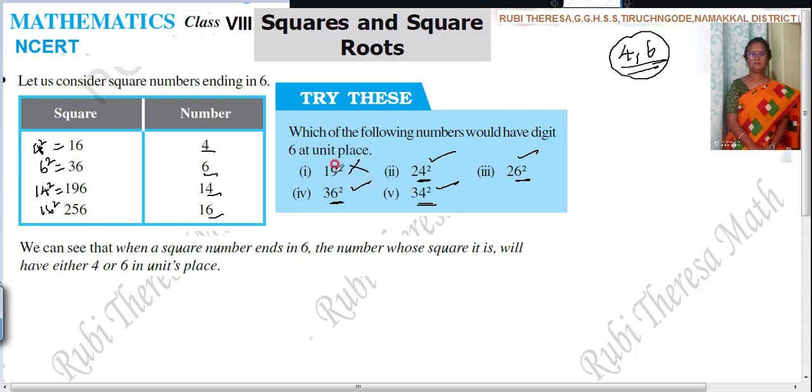This is not the answer. For 9, what is the answer? 1, 9. For 1 and 9, the square numbers will end in 1 in unit place. Ends in 1. So, it won't be the answer. Only these 4.